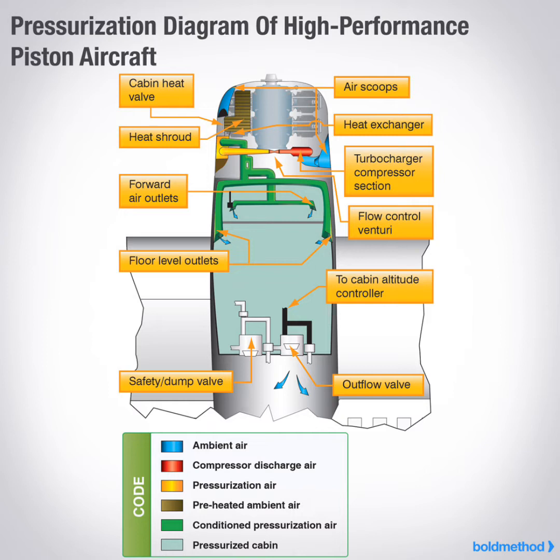What is the principal control element in a cabin pressurization system? Outflow valve. What is the purpose of the negative pressure relief valve in the pressurization system? Keeps cabin altitude lower than aircraft altitude.